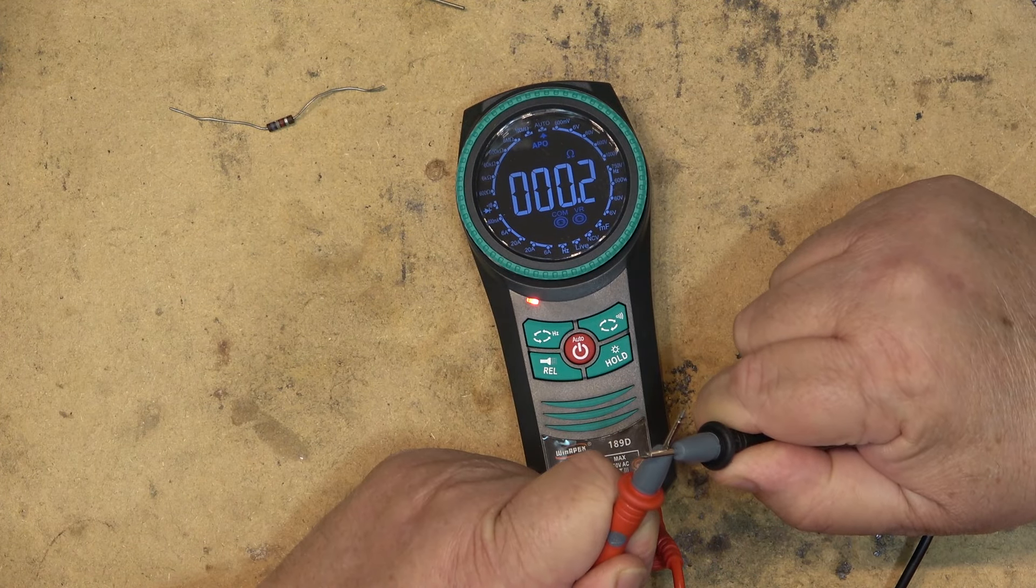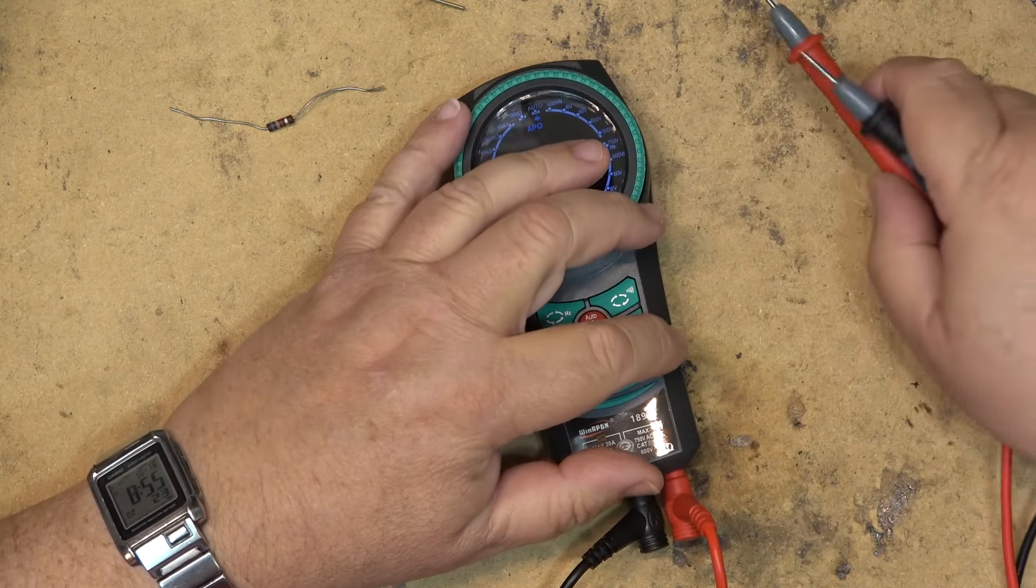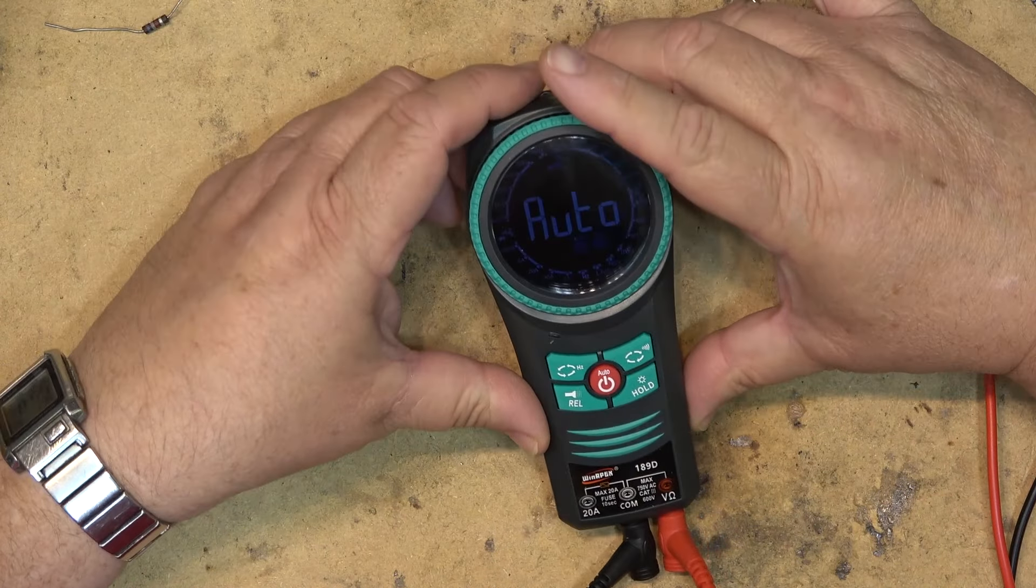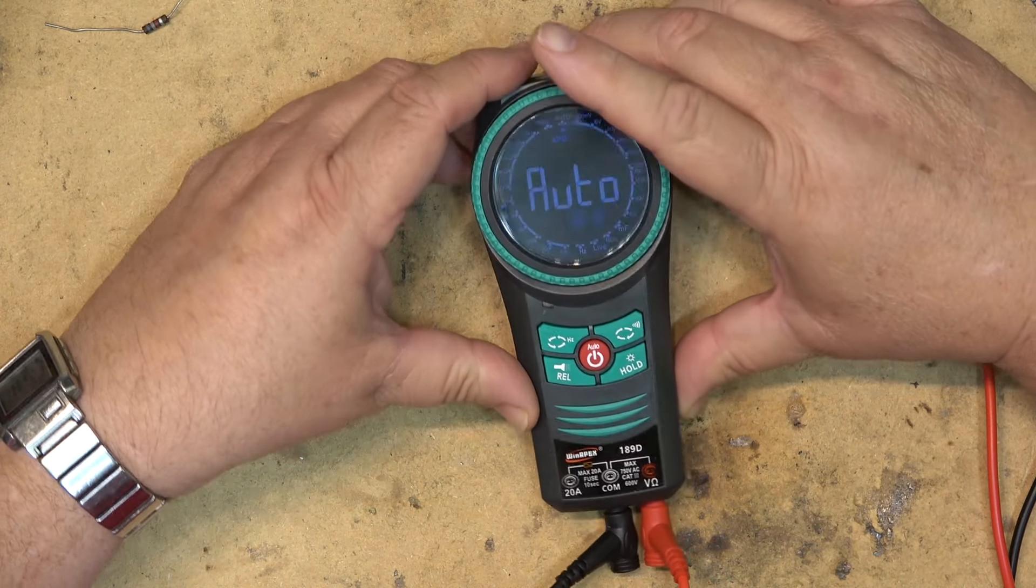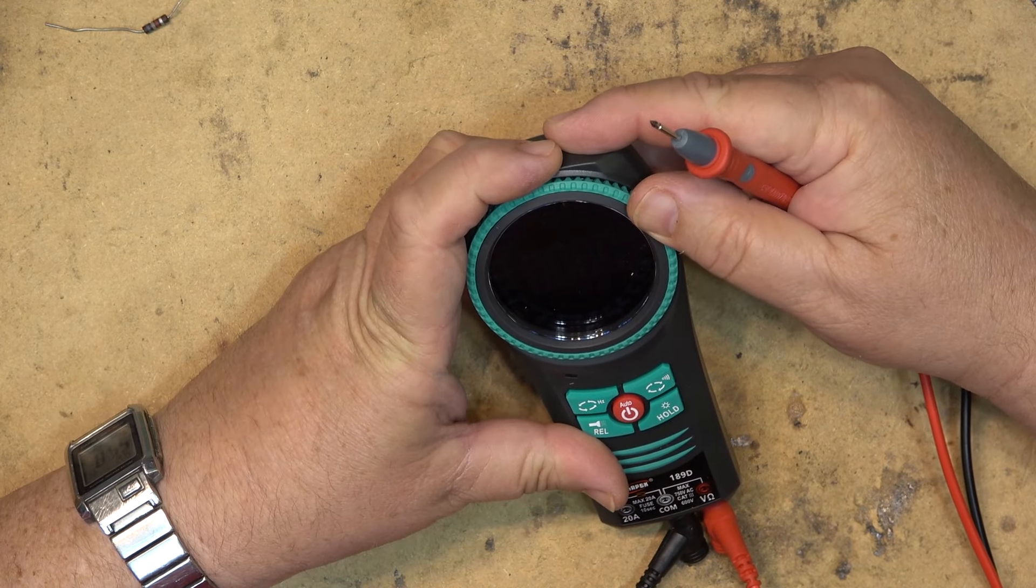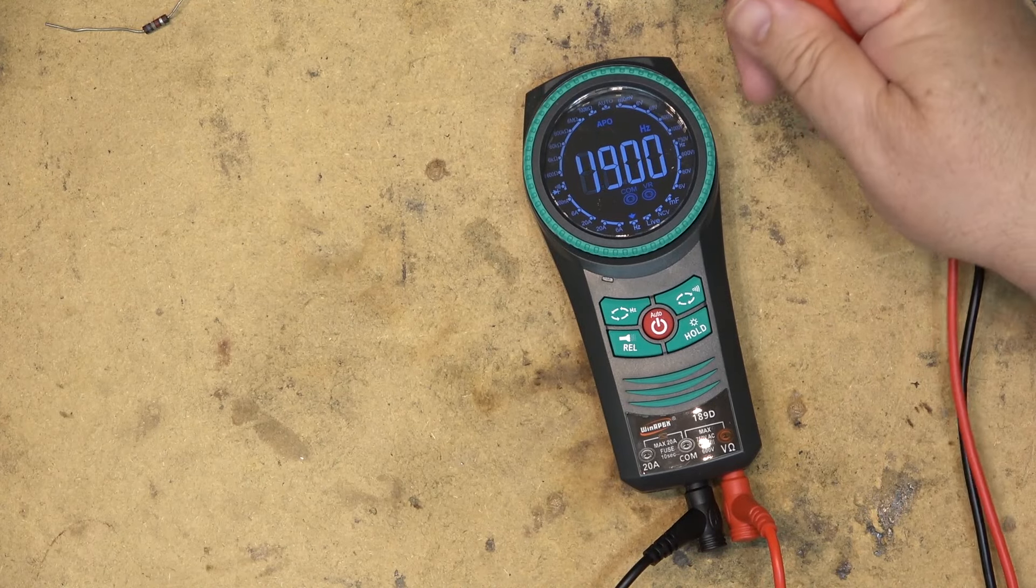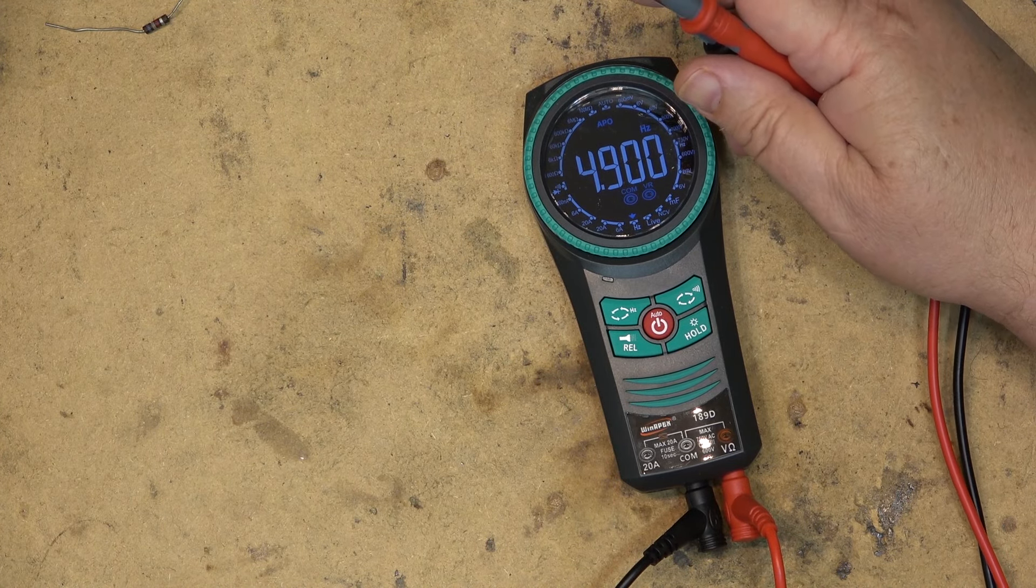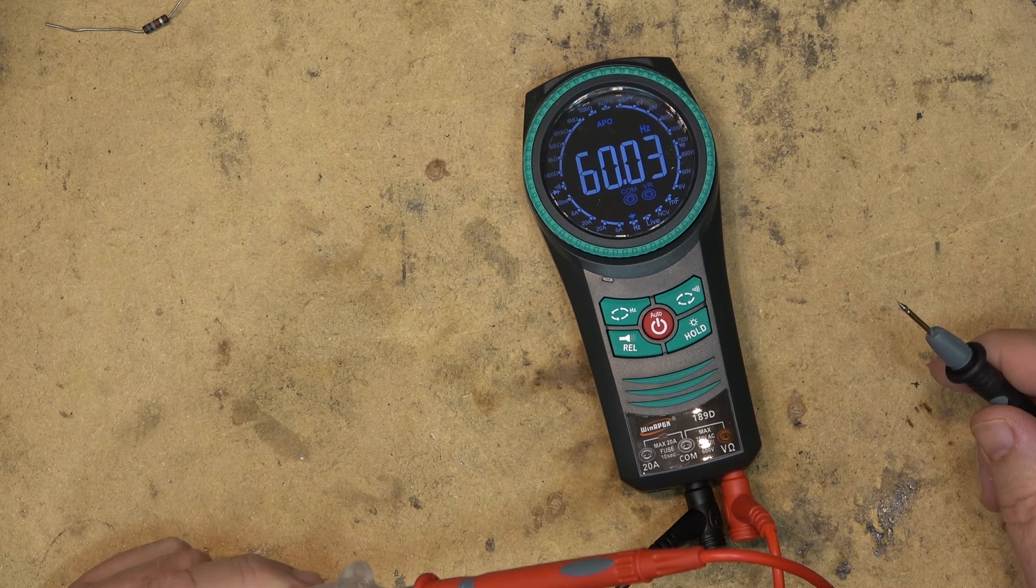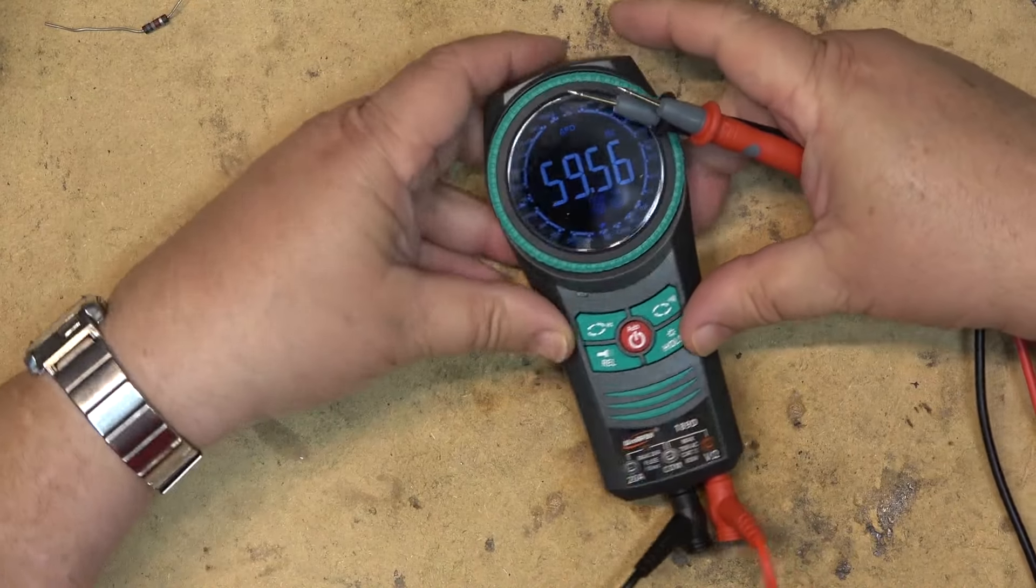So ohms measurement is dead on. Next we'll do a diode test. Of course it'll test for shorts, it'll beep. It goes into ohms mode automatically and will beep. Let me grab a transistor and we'll do the diode test. We can measure the Hertz as well if I put this down to Hertz and grab the power cord and plug it in, it'll tell me 60 Hertz. I only have to put one probe in, I don't even have to put the other one in to measure the frequency.